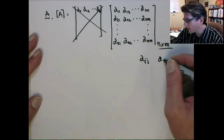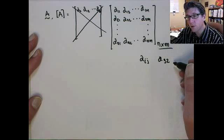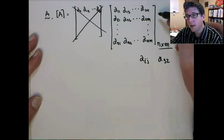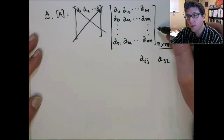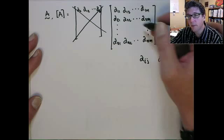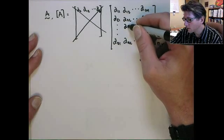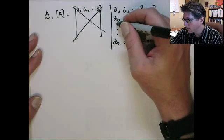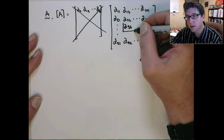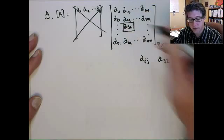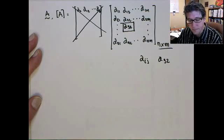So, for example, a_32 would be in the first, second, third row, second column. So it would sit right here.